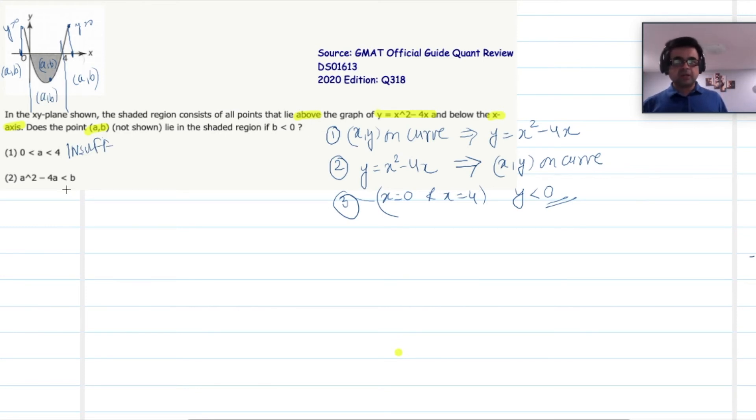For statement number two, I am given a squared minus 4a is less than b. Let us just call a squared minus 4a as c. And we are given b is greater than c. And we are also given that 0 is greater than b right here. So this is what we know.